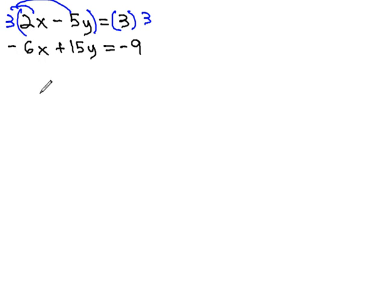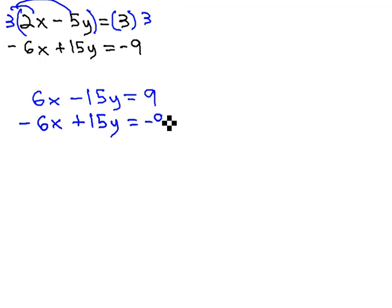When we distribute the 3 through, we get 6x minus 15y equals 9. The second equation is still the same, negative 6x plus 15y equals negative 9. And now that we have the opposites we want, we're ready to combine them.